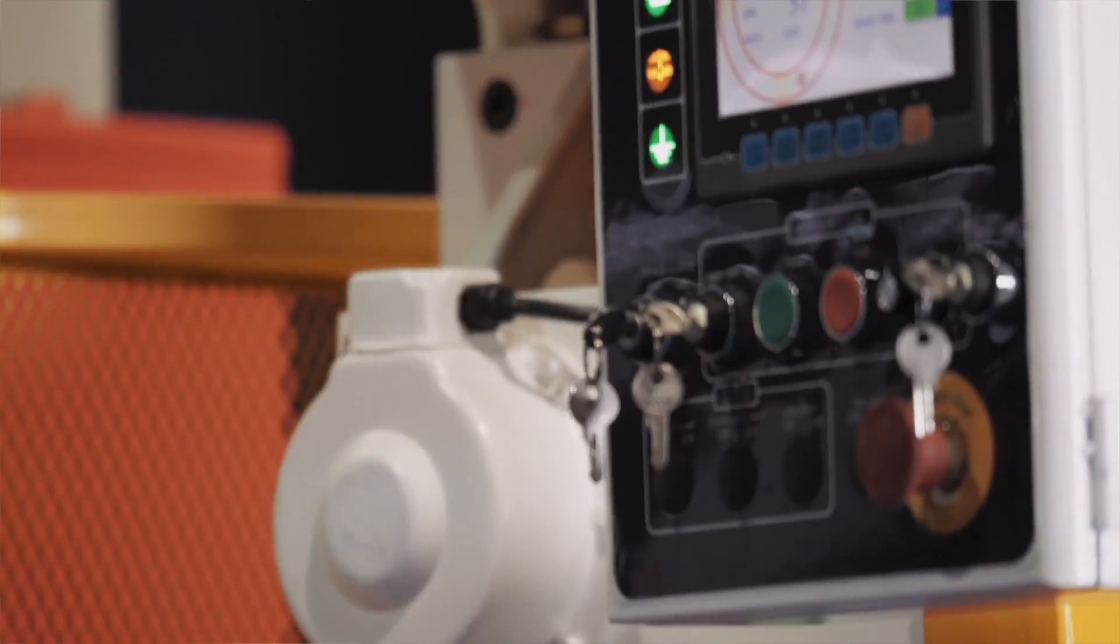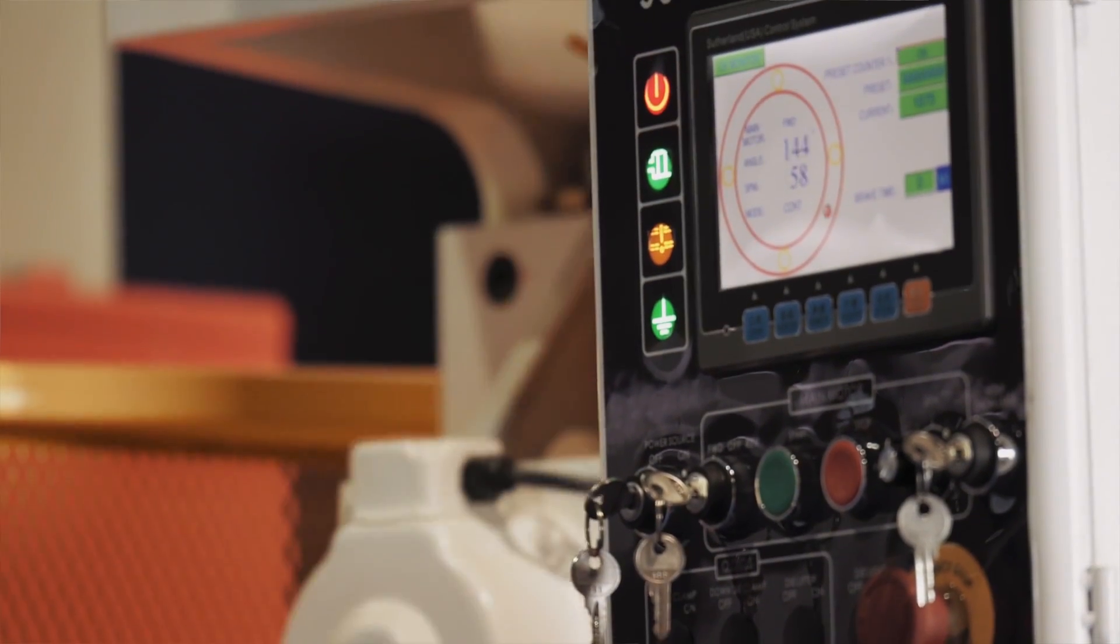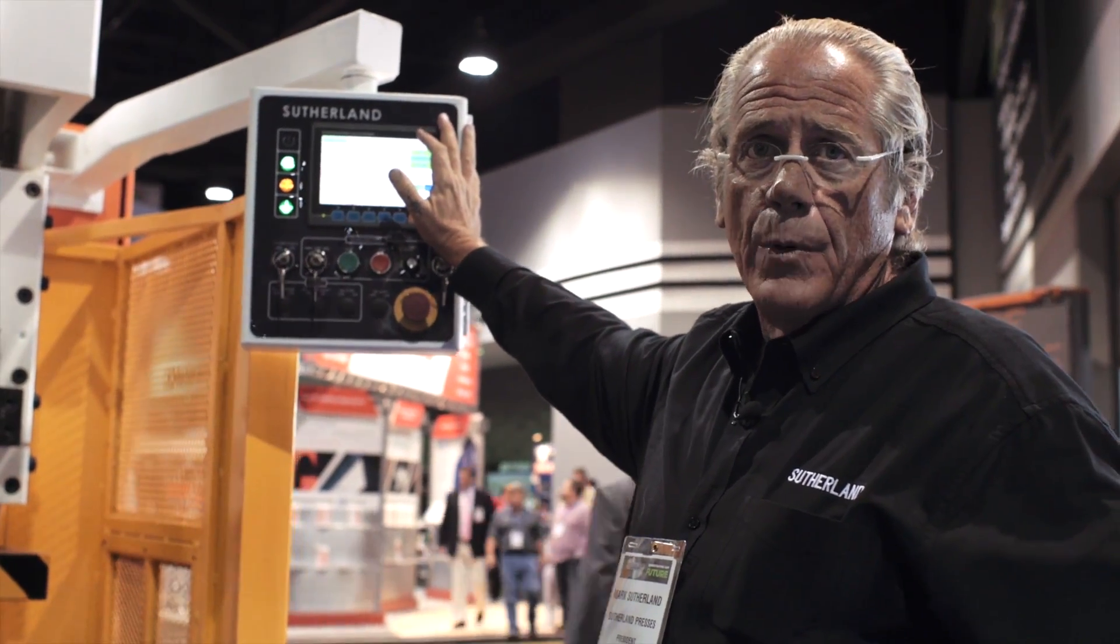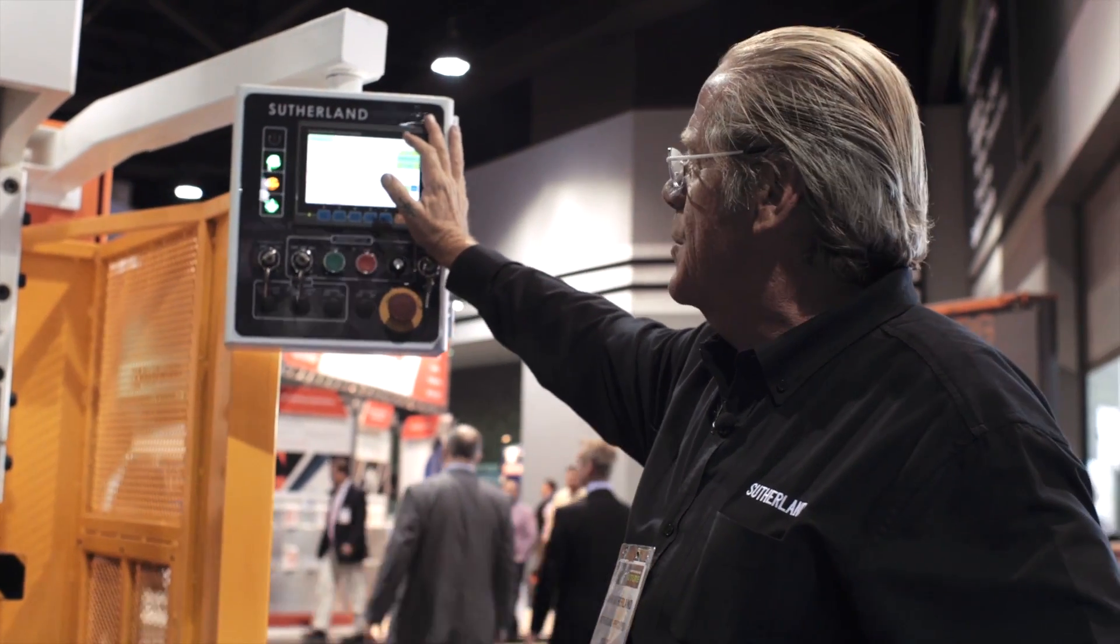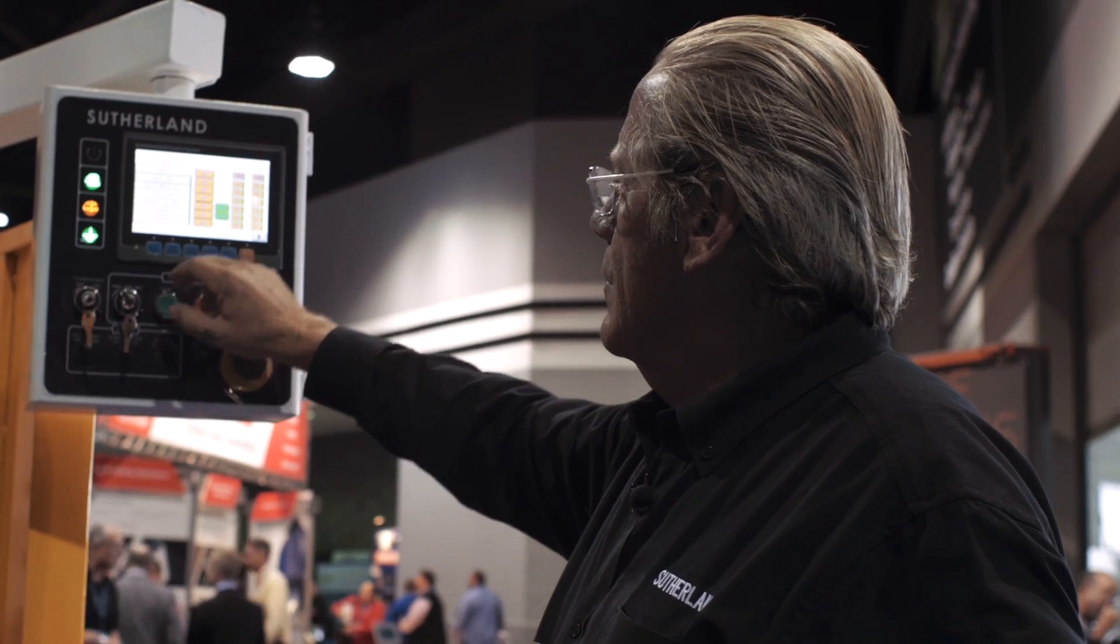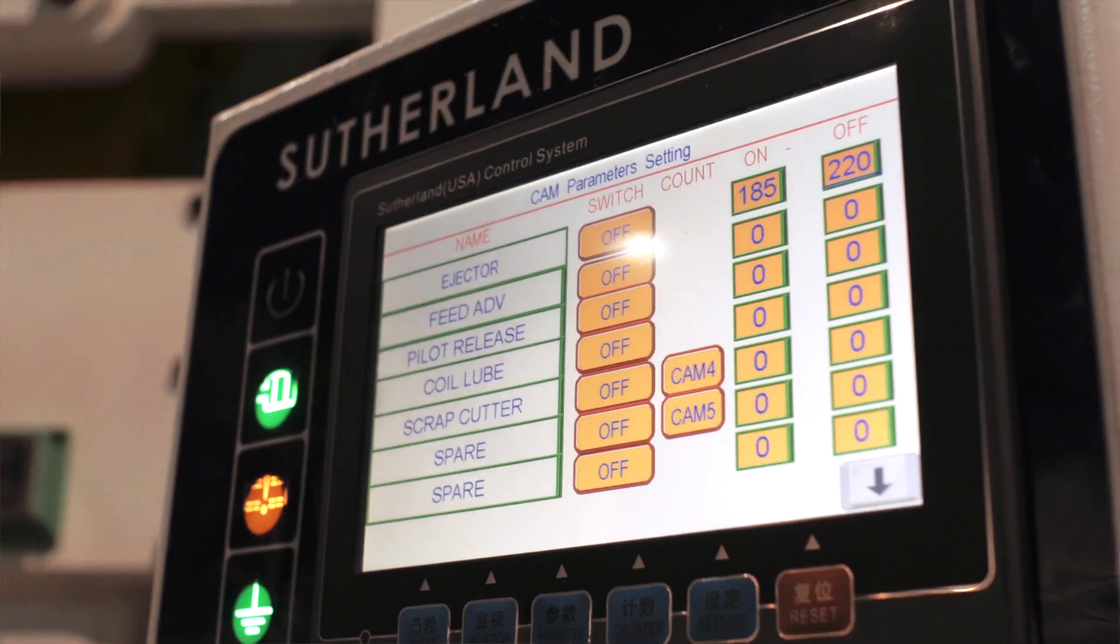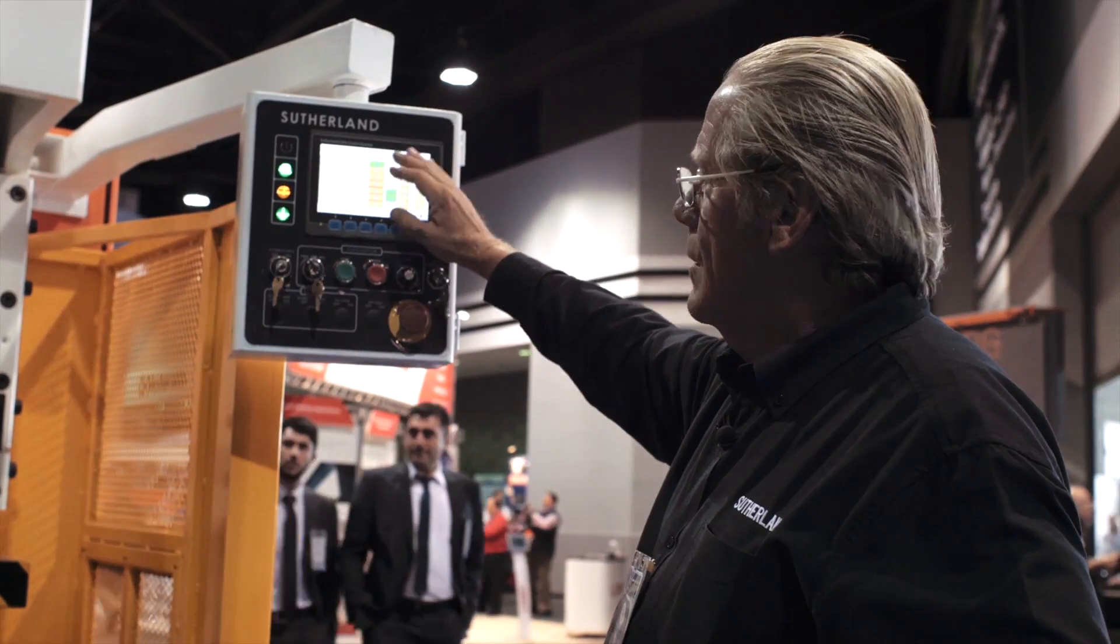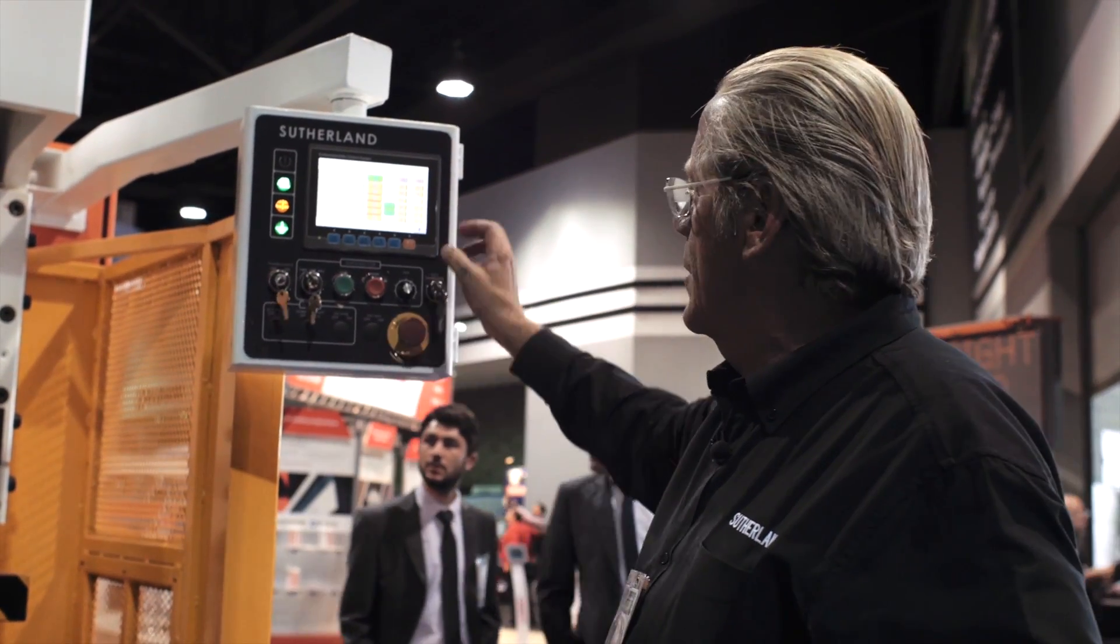The Sutherland Press comes with the iPress control. It has a lot of features for automatic operations as well as secondary operations. As you can see here, you've got a list of programmable cams that you can turn on, change the angles, which helps in automation of the press.